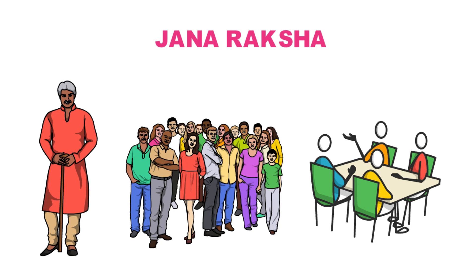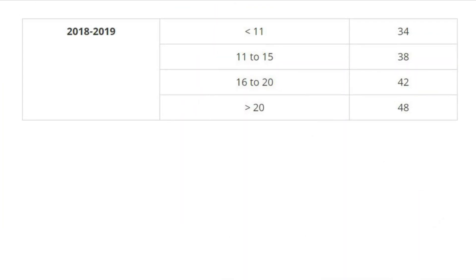So we will have to make a sum assured, plus a bonus, plus a final bonus. We will have to make a policy for the LIC. If you have a policy term, you would like to do it as a policy term. You can do the policy term, but you have a bonus rate here.